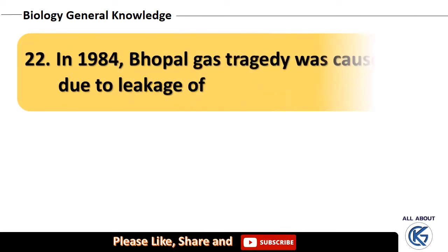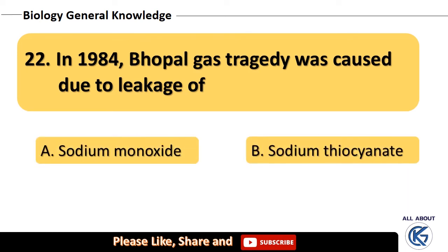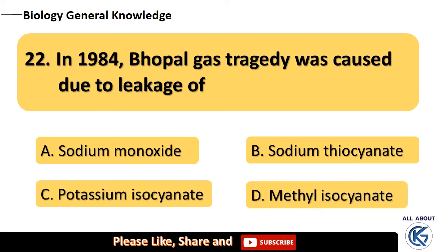In 1984, the Bhopal gas tragedy was caused due to leakage of — sodium monoxide, sodium thiocyanate, potassium isocyanate, or methyl isocyanate? The right answer is methyl isocyanate.